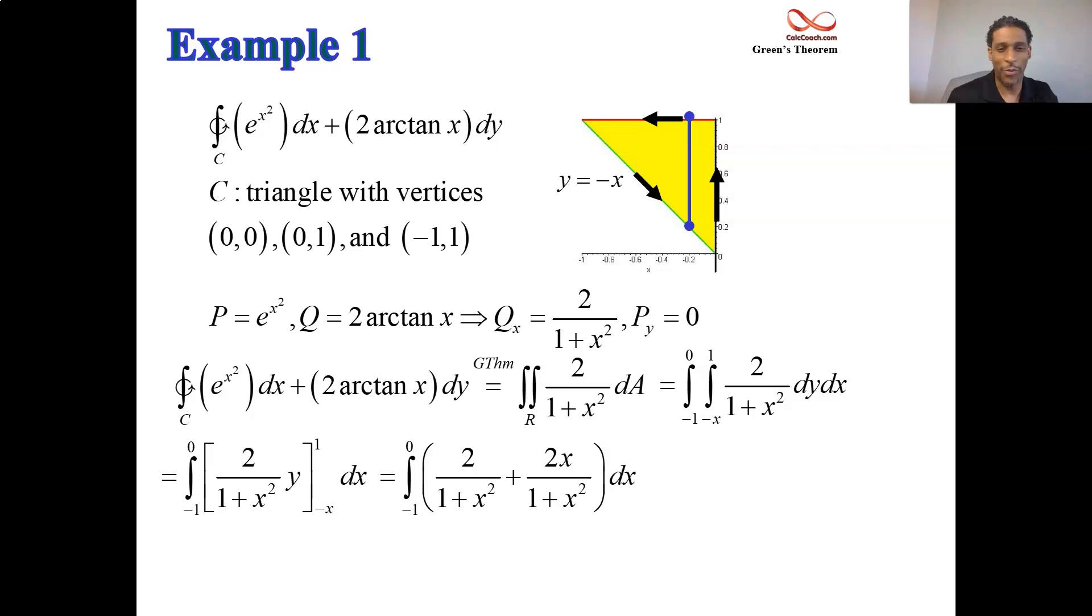Now we just have a calc 1 integral. The first integral is an arctan, the second integral is a natural log. You let u be the denominator, the numerator is the derivative of that. So we have twice the arctan of X as the anti-derivative of the first term and the natural log of the denominator as the anti-derivative of the second term.